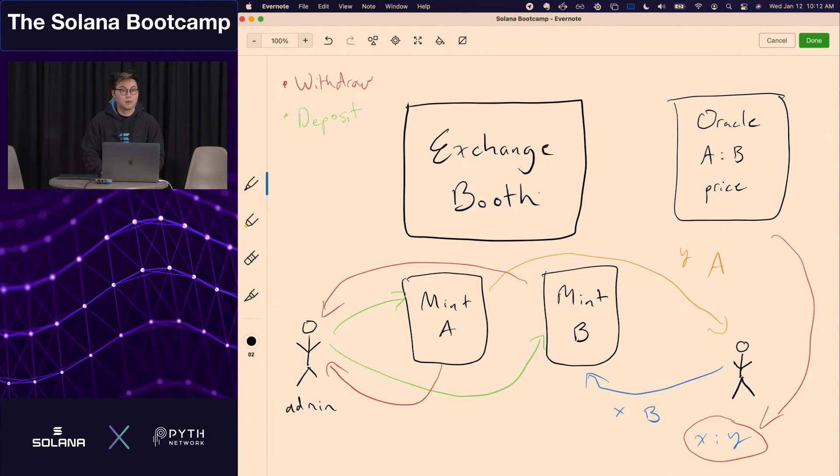Could we pass the mic around? Or if you want to, you can come up here and ask the question. Yeah, thank you. That might be a little bit confusing. The question was, why are these labeled mint A and B? In fact, these are just vaults. So I will change that label to make it more clear. So these are vaults. They will be represented as just normal token accounts, and they contain tokens for A and B. Yes, question in the back.